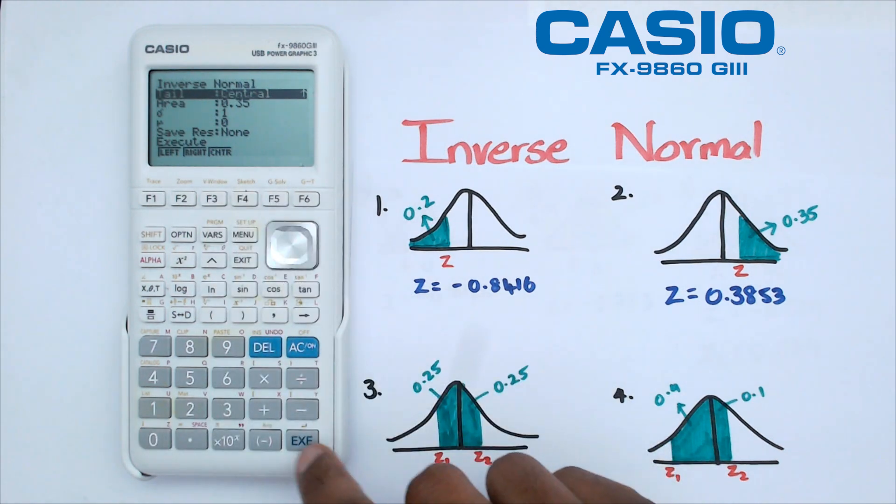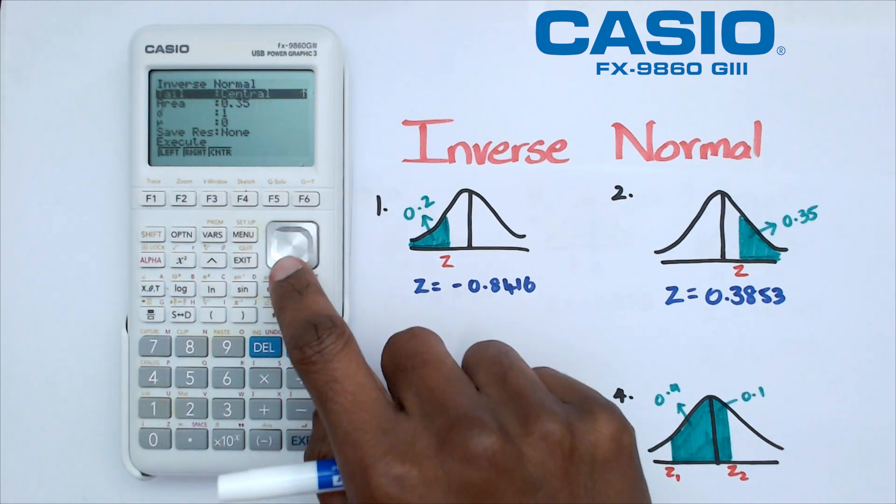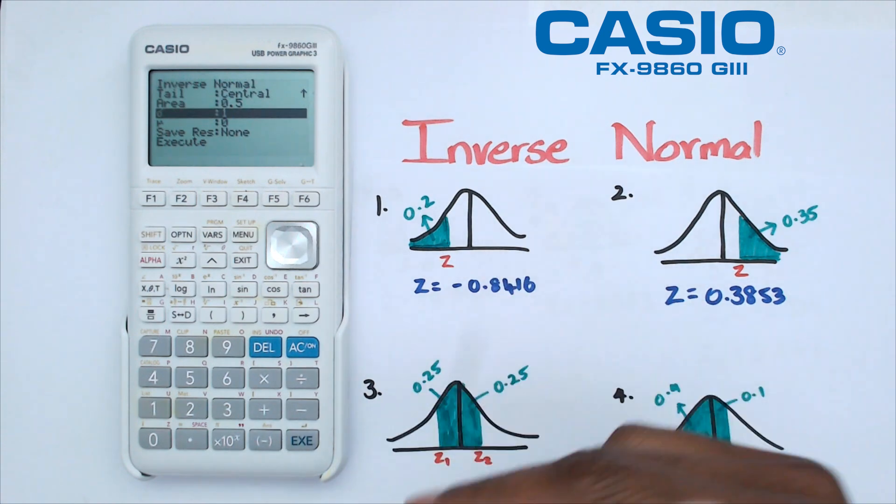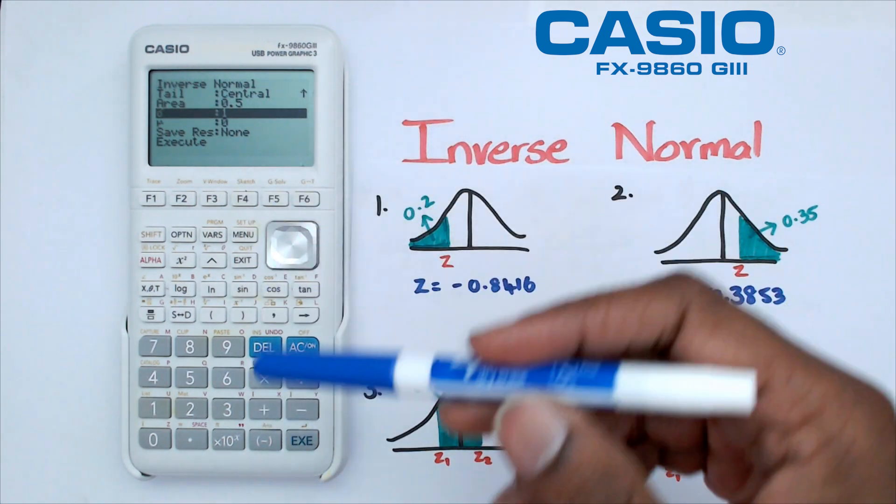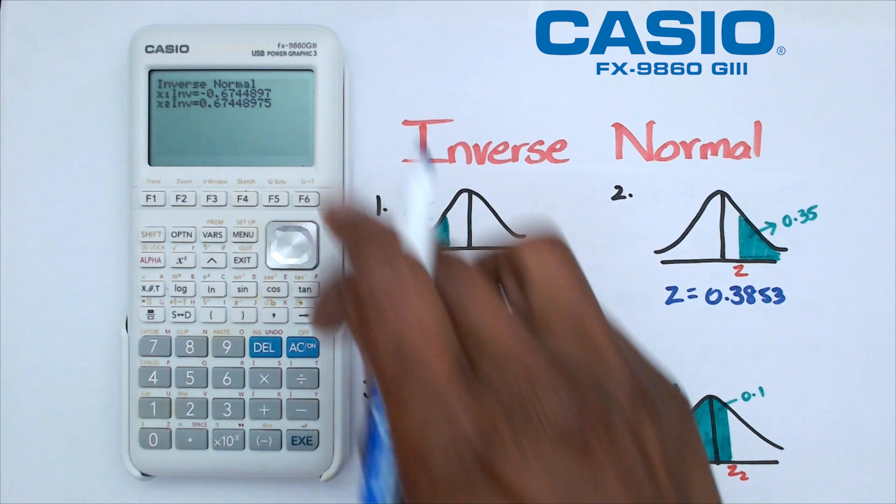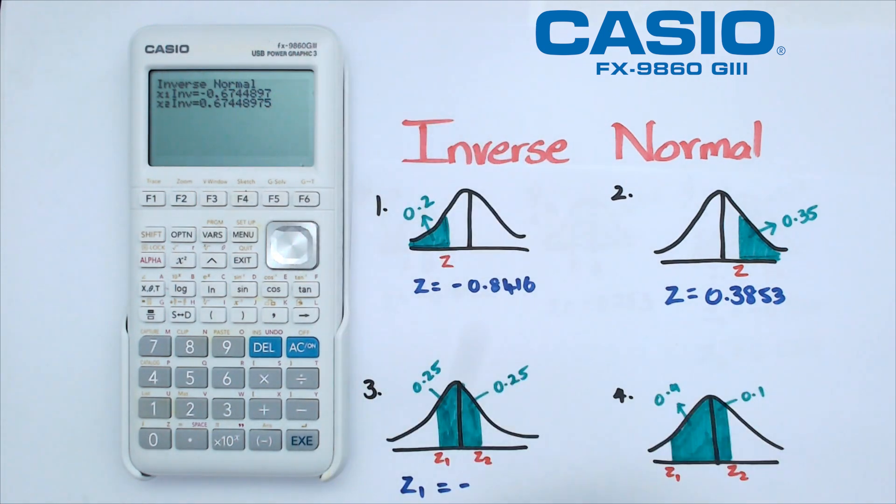Our probability is going to be 0.5, standard deviation is 1, and mean is 0. Remember, if you are working with real-world values, then all you would do is change the standard deviation and the mean to whatever your question is asking. Because it's symmetrical, we know that z1 and z2 are going to end up being the same, except one will be positive and one will be negative. As you can see, z1 is negative 0.6745 and z2 is equal to positive 0.6745.